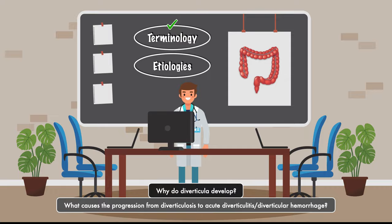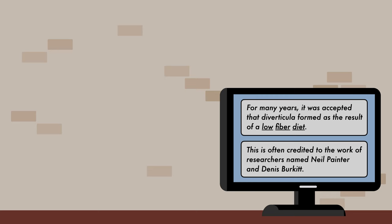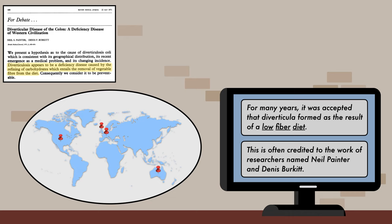For many years, it was accepted that diverticula formed as the result of a low-fiber diet. This is often credited to the work of researchers Neil Painter and Dennis Burkitt. In a landmark publication from 1971, they stated that diverticulosis appears to be a deficiency disease caused by the refining of carbohydrates, which entails the removal of vegetable fiber from the diet. Their justification was that the prevalence of diverticula in developed countries like the United States had increased with advances in food processing and subsequent changes to the food supply.